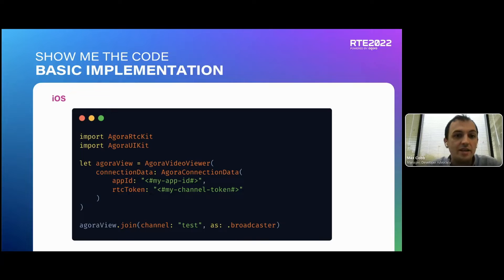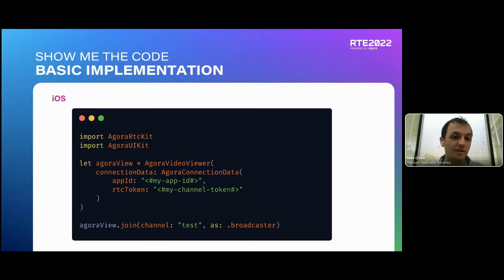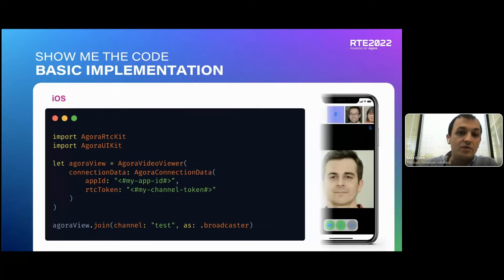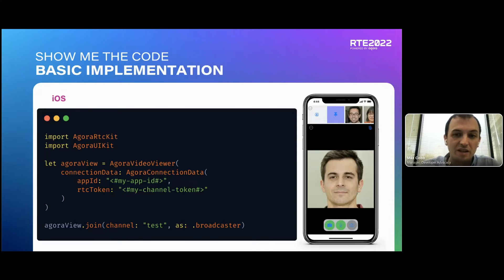For the actual implementation, there are really only two things: creating the Agora Video Viewer and joining the channel. Within that video viewer you pass in your credentials such as the app ID and token — this is a basic example that won't fetch the token for you, but there are examples on GitHub for that. You pass in a URL and tell it to fetch the token. All you need beyond this is to tell your app where you want this view, whether full screen or within a smaller part of your screen. The result looks like what you see on the right — a main speaker and other speakers across the top, with camera, microphone, and camera flip controls.